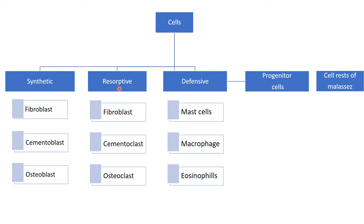Under the resorptive cells, we have similar things opposite to the synthetic cells. The fibroblast itself plays a dual role of synthesis and resorption. Then the cementoclast and the osteoclast. We need to remember the suffix attached here — if a word ends with 'clast,' it is involved in resorption; if it ends with 'blast,' it is involved in synthesis.